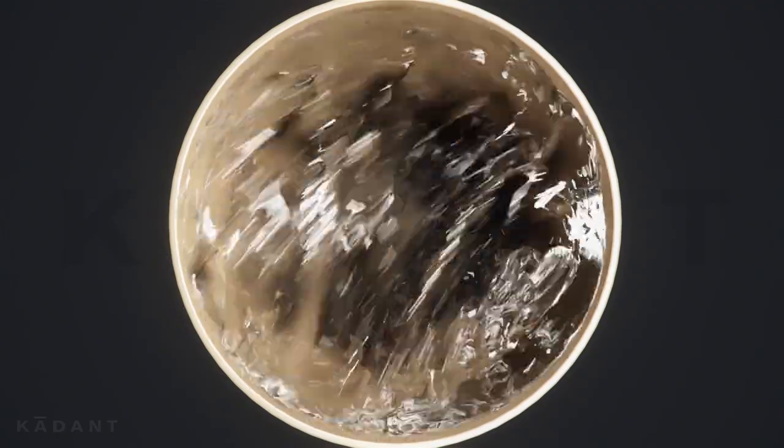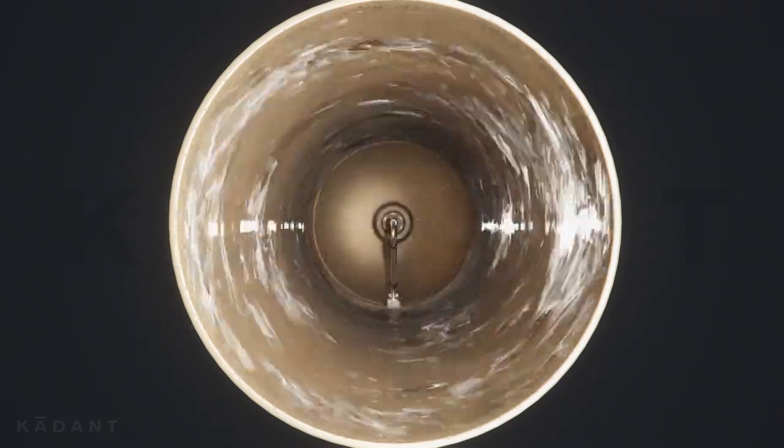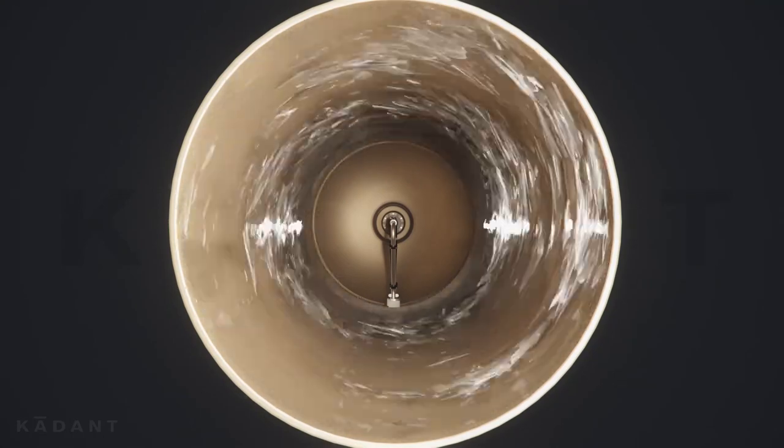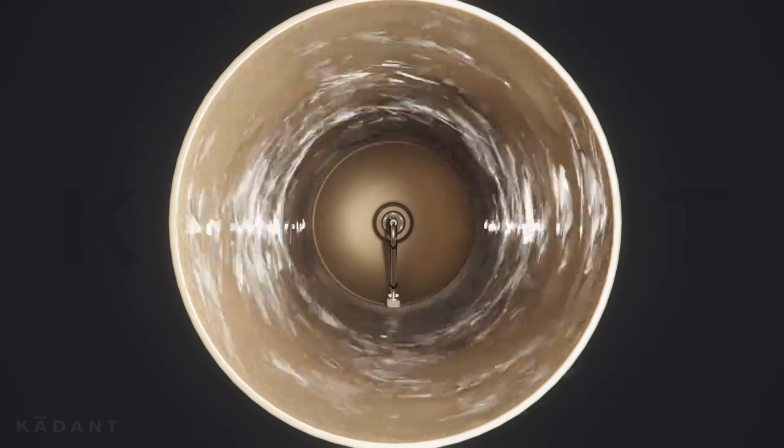As the dryer cylinder speed increases, centrifugal force will cause the condensate to rim. Rimming condensate forms an insulative layer between the steam and dryer shell, reducing heat transfer.